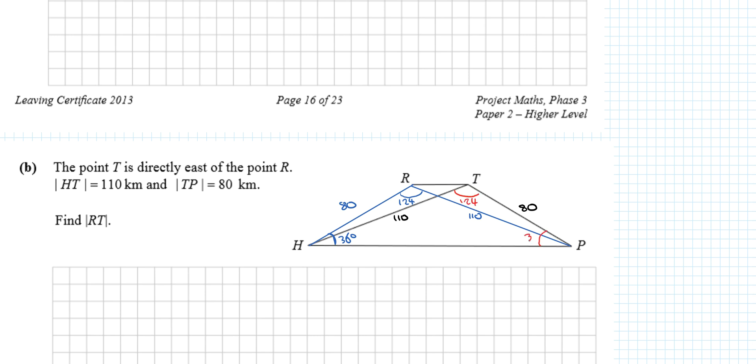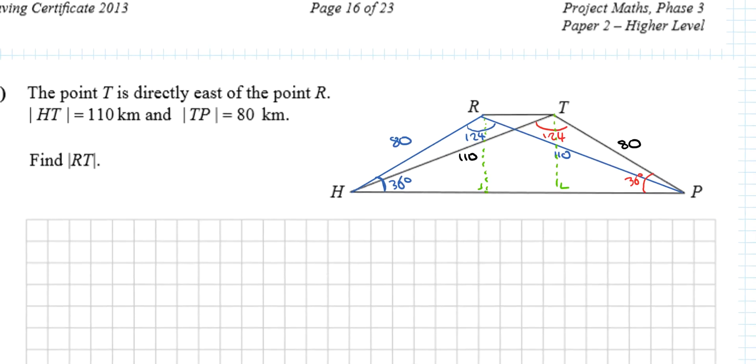What we're really looking for is the distance from this point - let's call them J and K. We're looking for the distance between J and K.